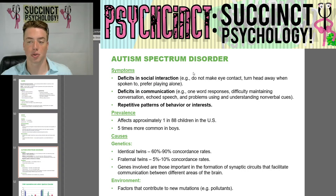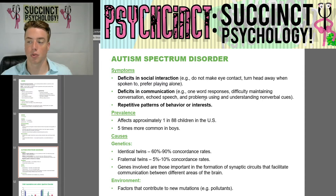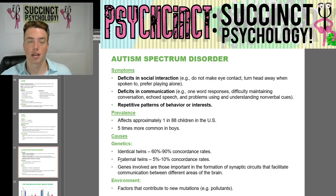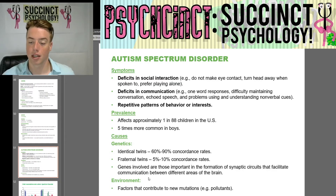Autism spectrum disorder symptoms include deficits in social interaction — for example, not making eye contact, turning the head away when spoken to, preferring to play alone — and deficits in communication, such as one-word responses, difficulty maintaining conversation, echolalic speech, and problems using and understanding non-verbal cues. There are also repetitive patterns of behavior or interest. Prevalence affects approximately 1 in 88 children in the U.S., and it is five times more common in boys. Genetic causes: identical twins show 60–90% concordance rates; fraternal twins show 5–10% concordance rates. Genes involved are those important in the formation of synaptic circuits that facilitate communication between different brain areas, and environmental factors such as pollutants may contribute to mutations.